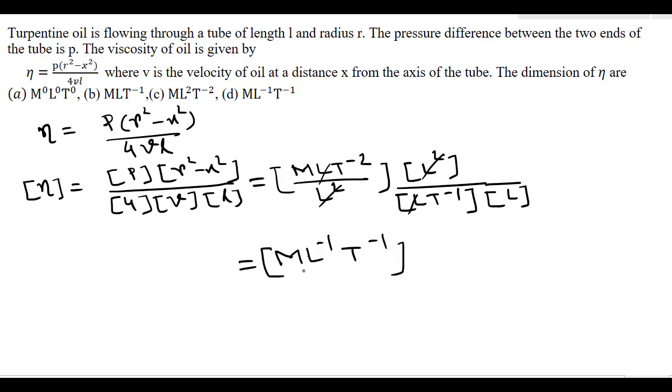The dimension of eta is ML⁻¹T⁻¹. So option d is the right answer.